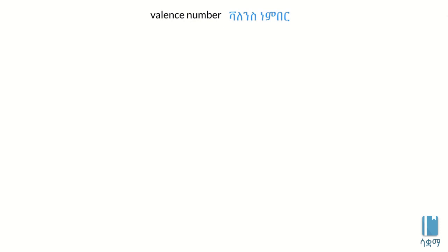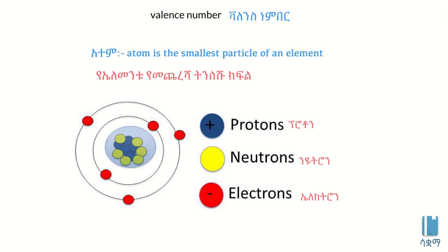Hello everyone, welcome to Balanced Number. Balanced Number is the structure of the atom. Atom is the smallest particle of an element.